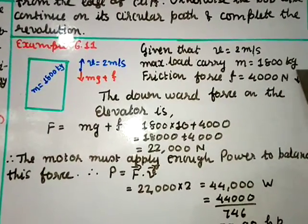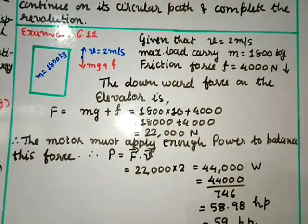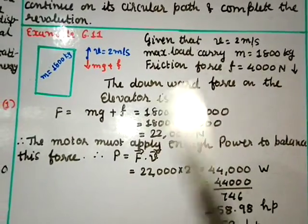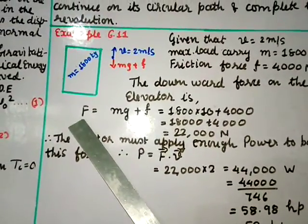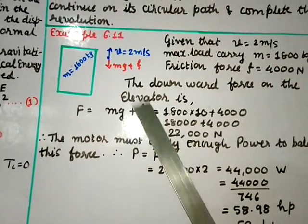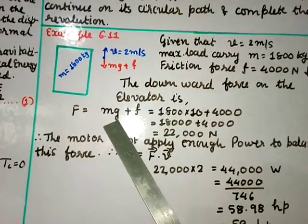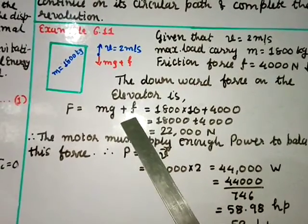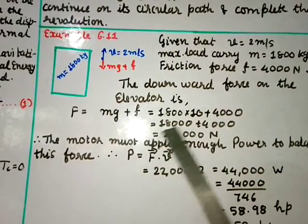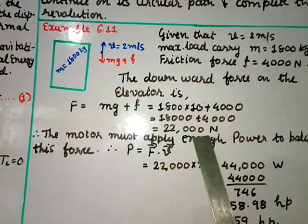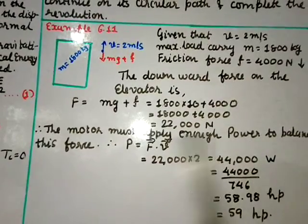The velocity upward is v = 2 m/s, mass m = 1800 kg, and frictional force f = 4000 N downward. The total downward force on the elevator is F = mg + f = 1800 × 10 + 4000 = 18000 + 4000 = 22000 N.